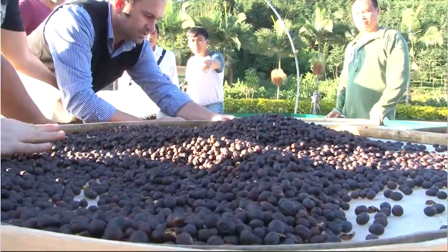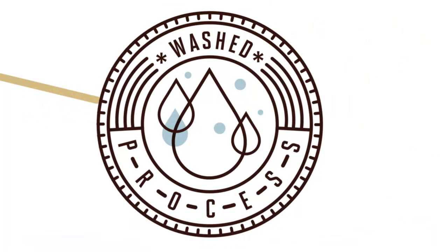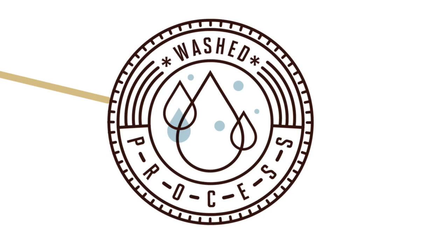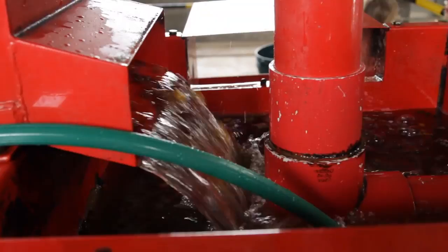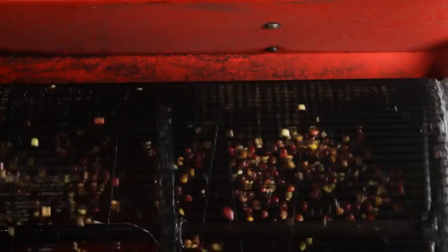Now let's look at washed processing. Wash processing isn't the simplest, but it's the most widely used. For wash processing, first we siphon the coffee to get any floaters off the top, then we depulp the coffee.